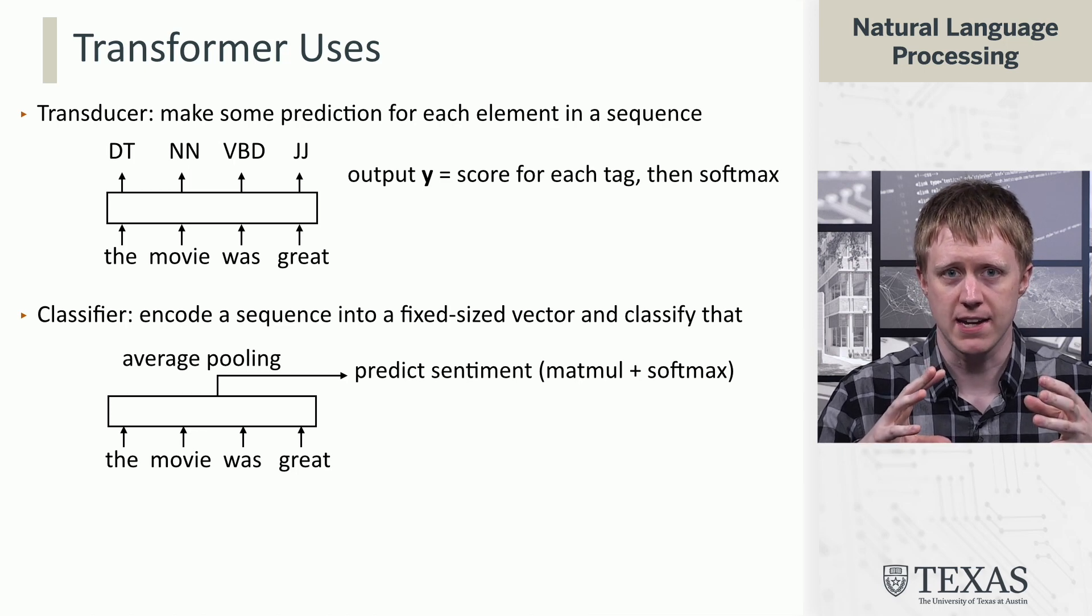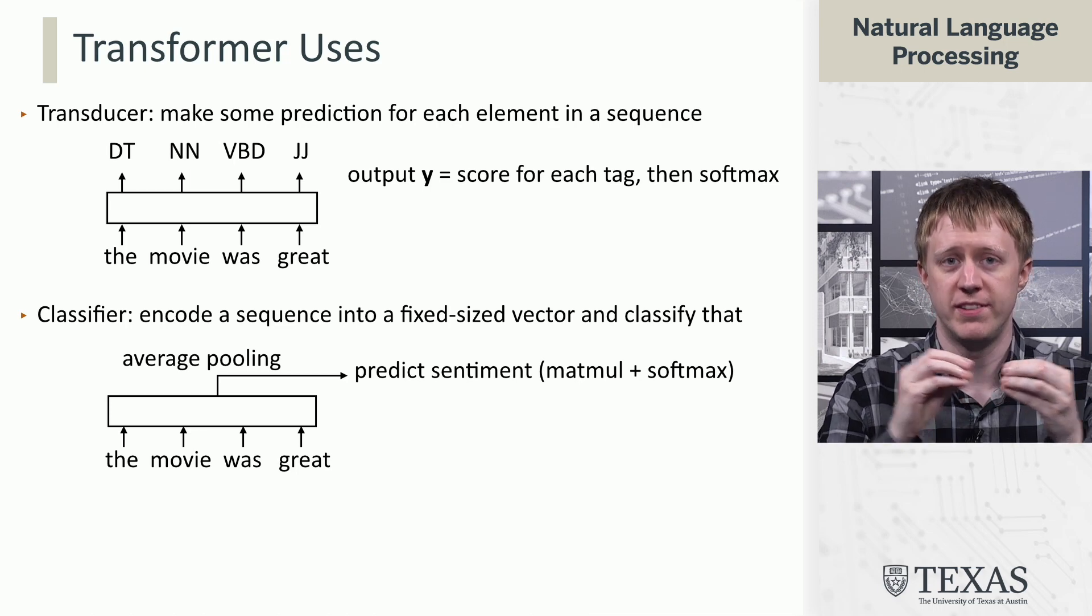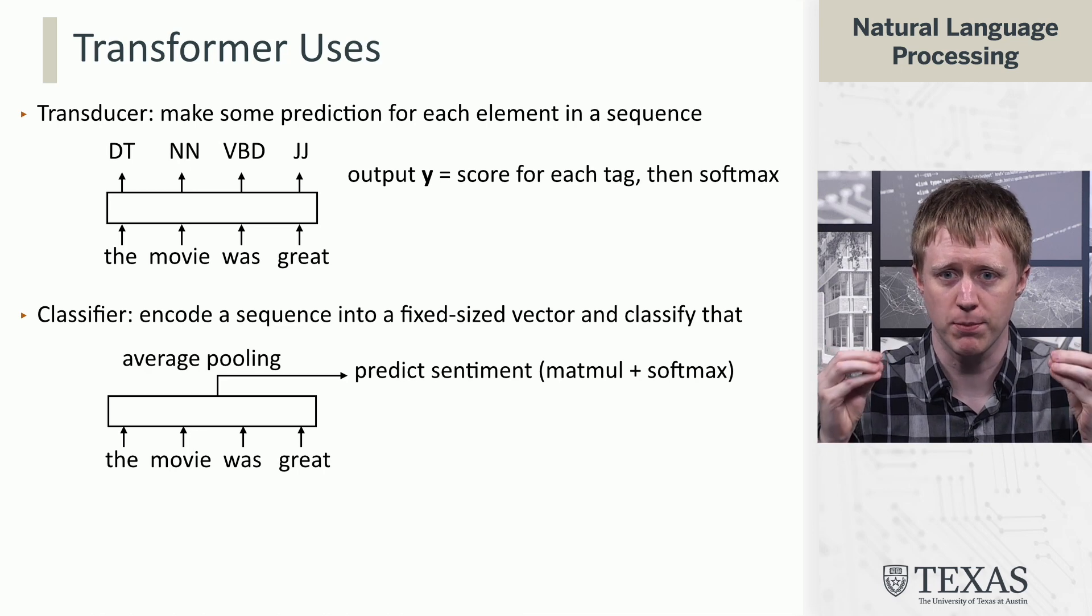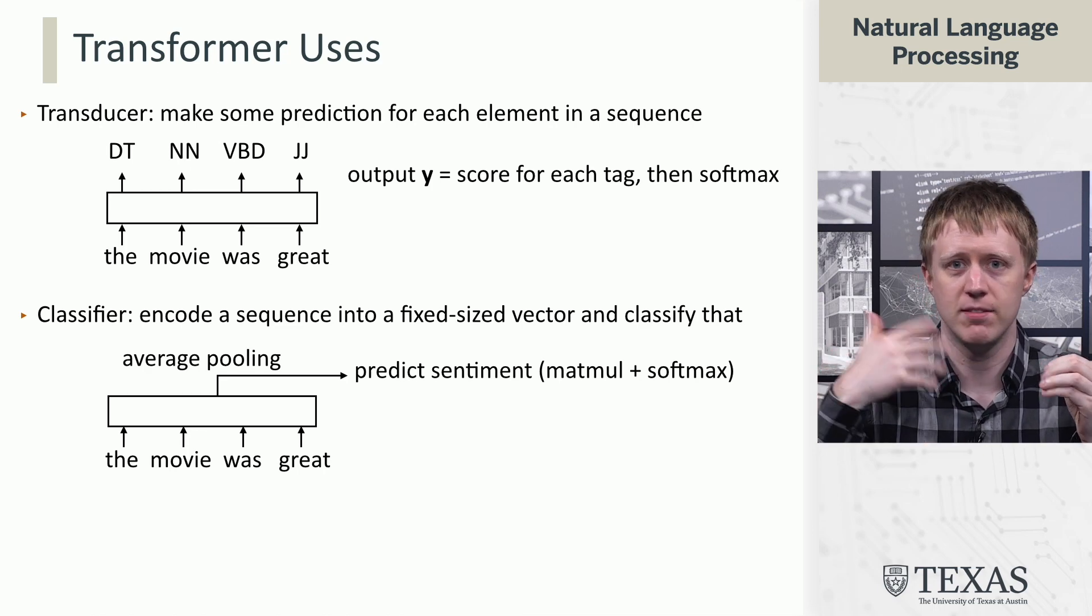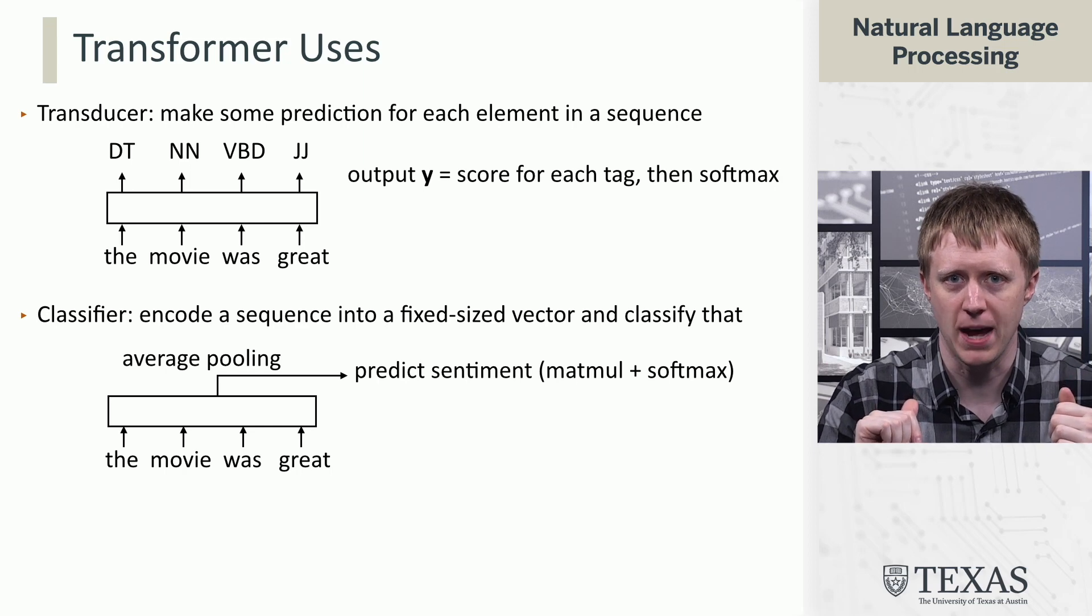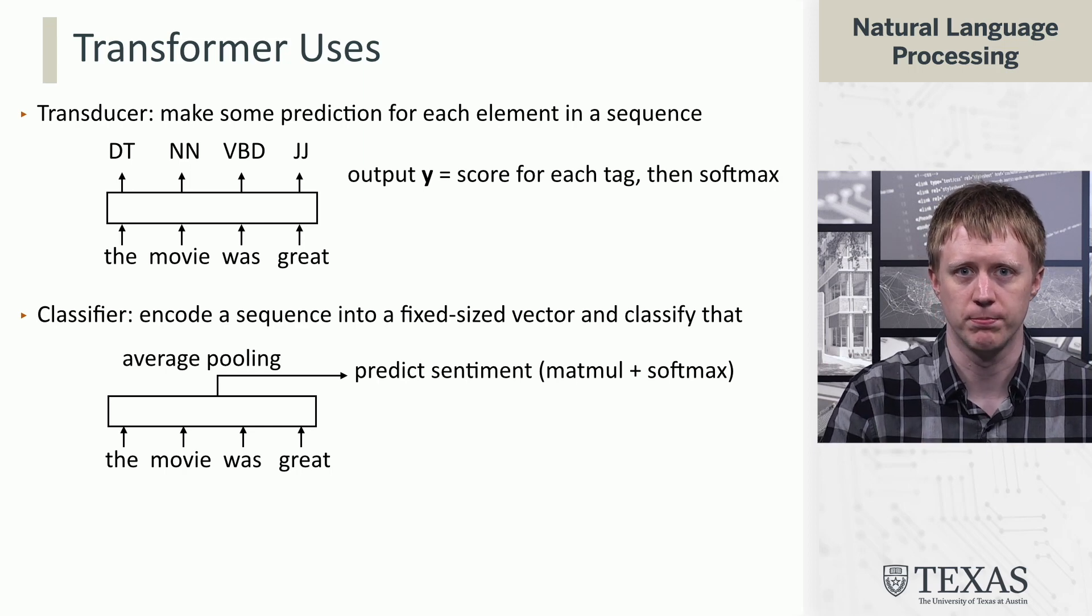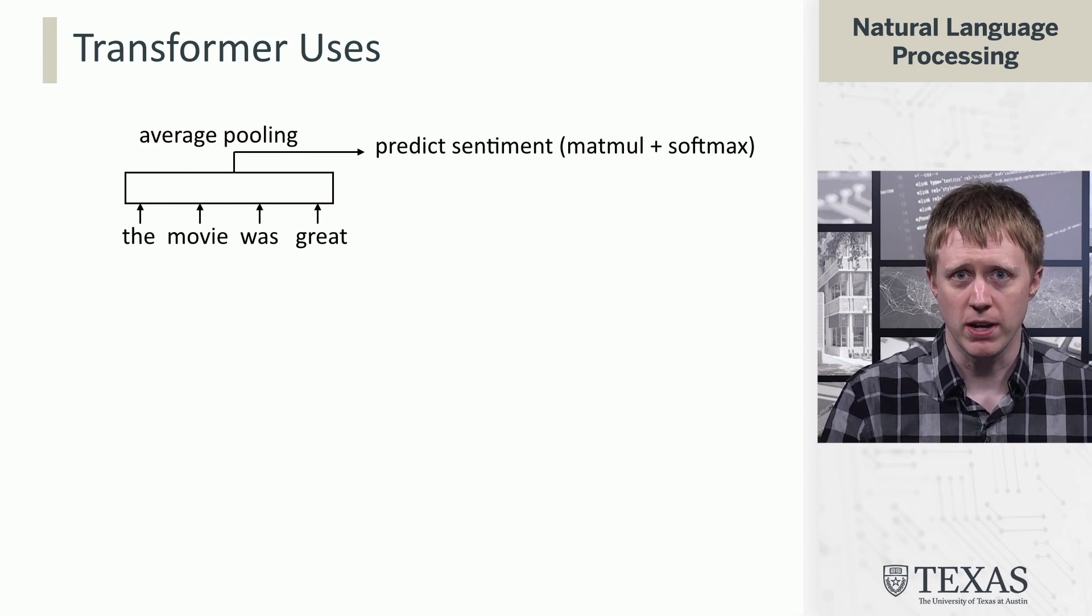We can take the contextualized representations we get from the transformer layer, average those, and then do matrix multiply and softmax to do something like sentiment prediction. Now, that's one way to do it.